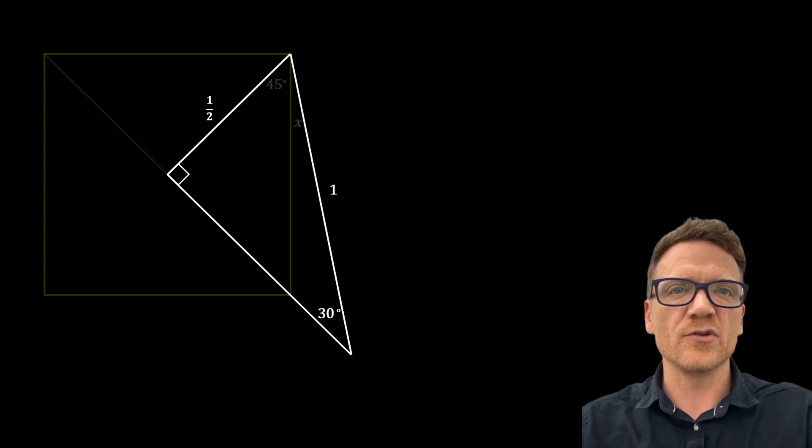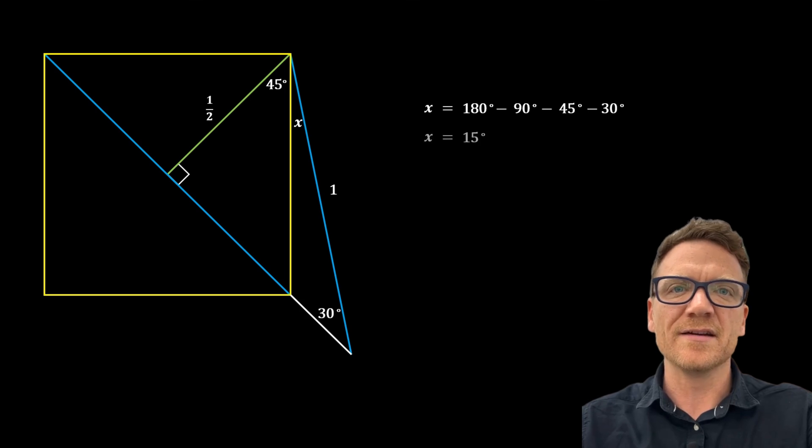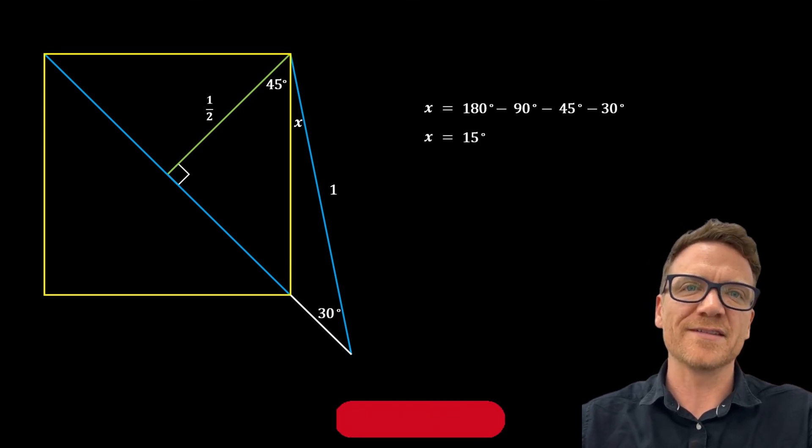And now we can solve for x. Using internal angles of a triangle add up to 180, we know that x is equal to 180 minus 90 minus 45 minus 30, so x is 15 degrees. That is a nice question.